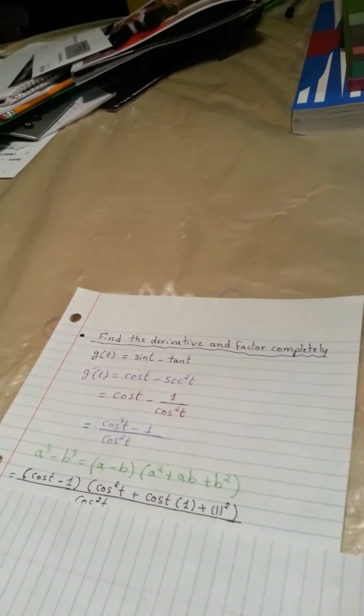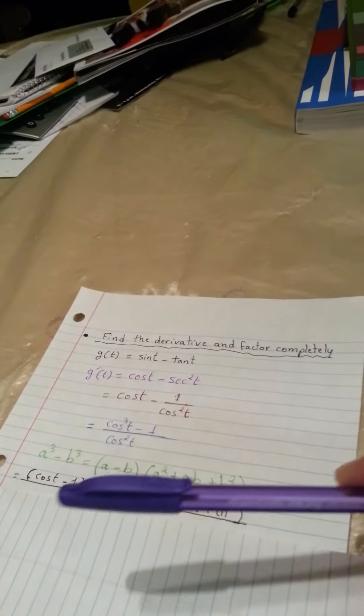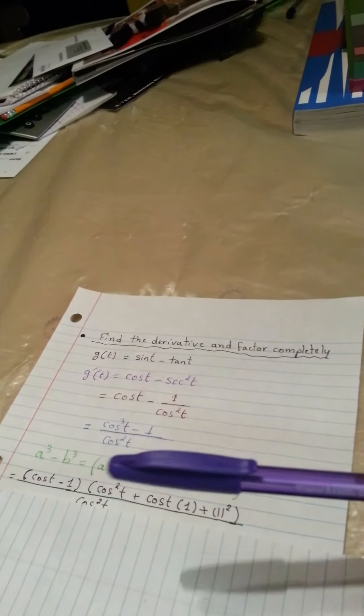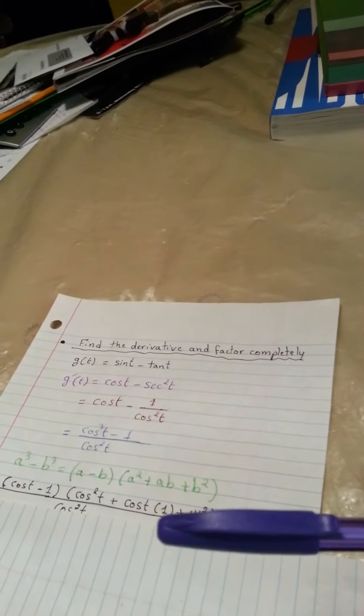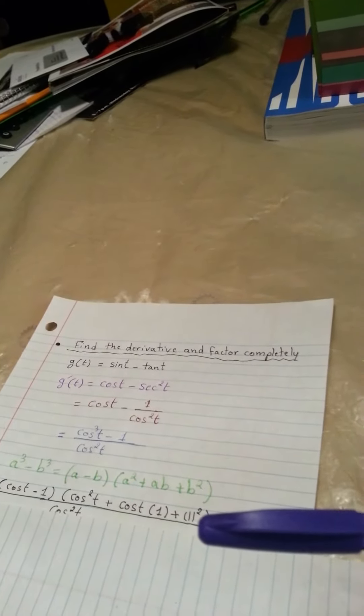We substitute a with cosine t, b with 1, a squared with cosine squared t, ab with cosine t times 1, and b squared with 1 squared.